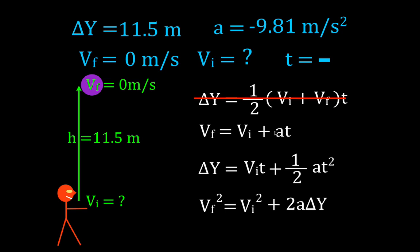Now you'll notice the next two equations also have the time in them. They also have the initial velocity but we don't know the time. So therefore we cannot use this equation and we cannot use this equation. What about this last equation?